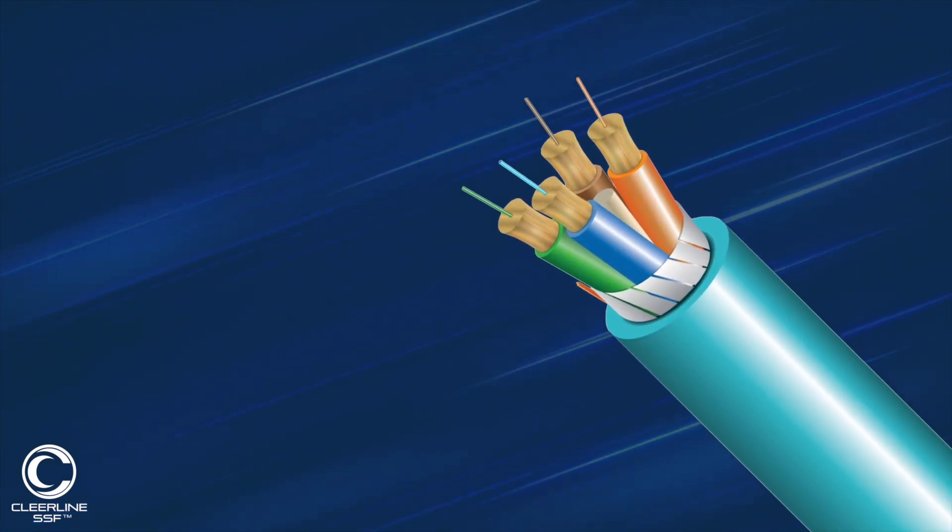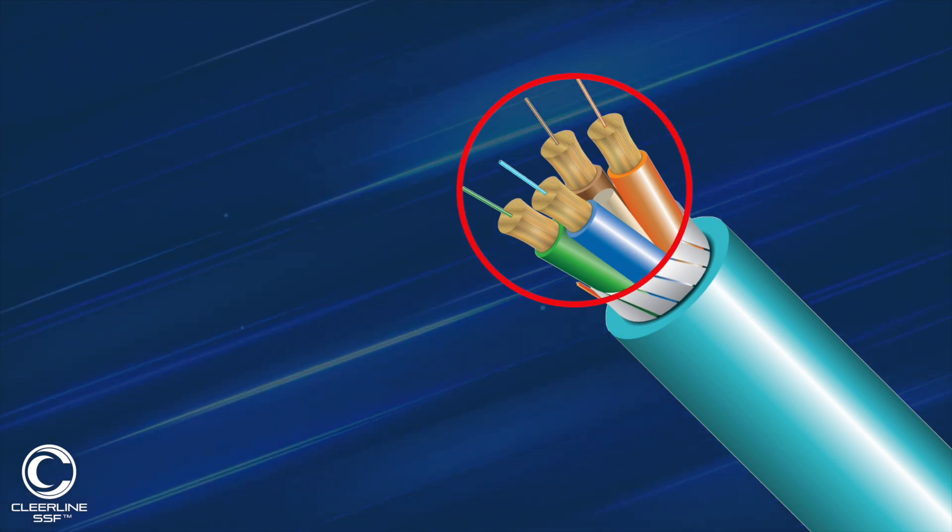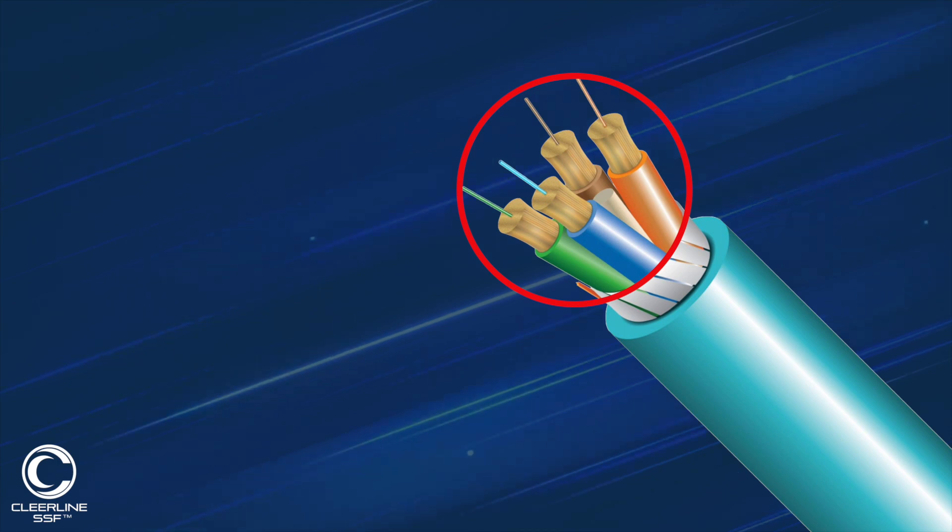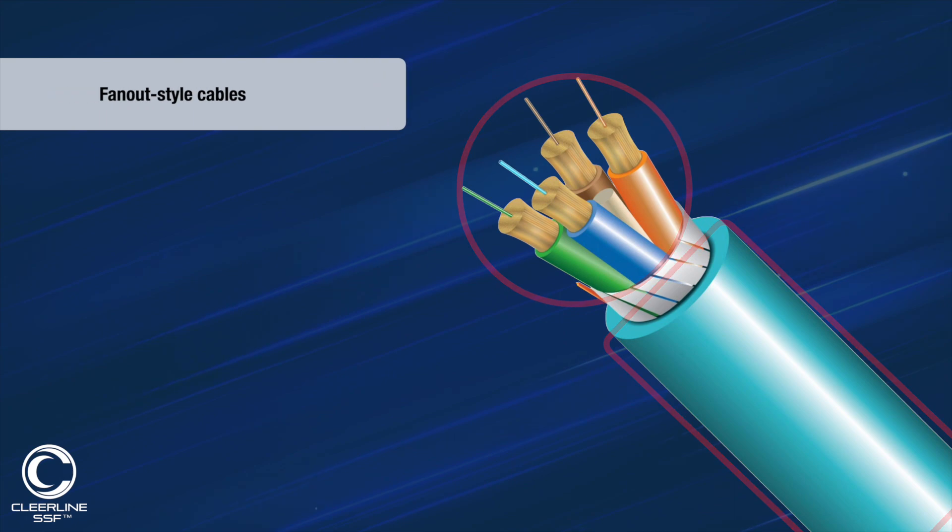Breakout cable is a type of fiber optic cable that contains several micro distribution fibers, each with their own two millimeter jacket, all encased by a single common jacket. Breakout cables are often referred to as fan-out style cables.